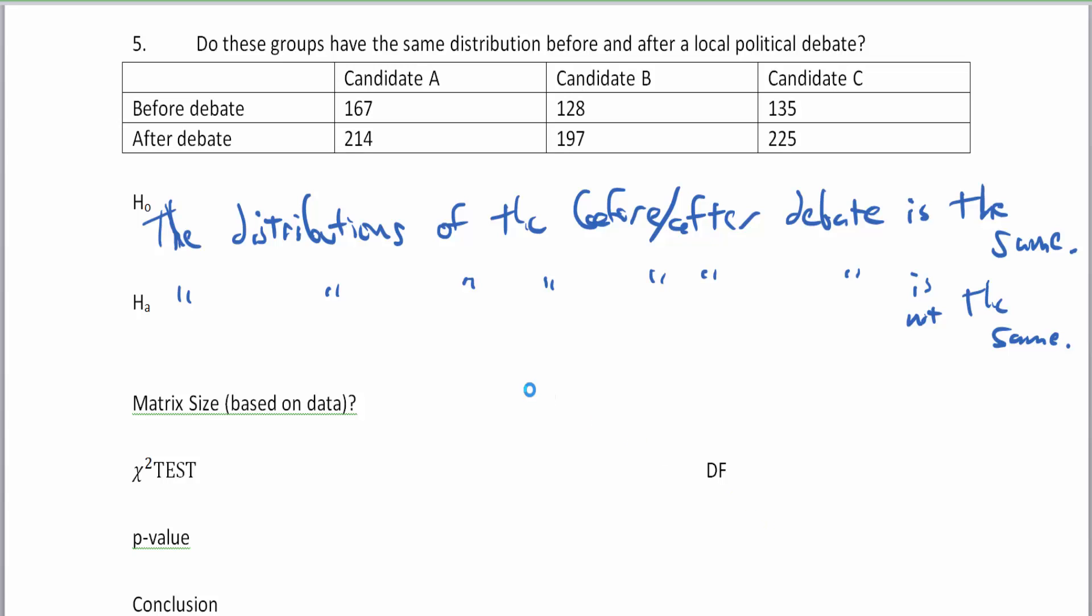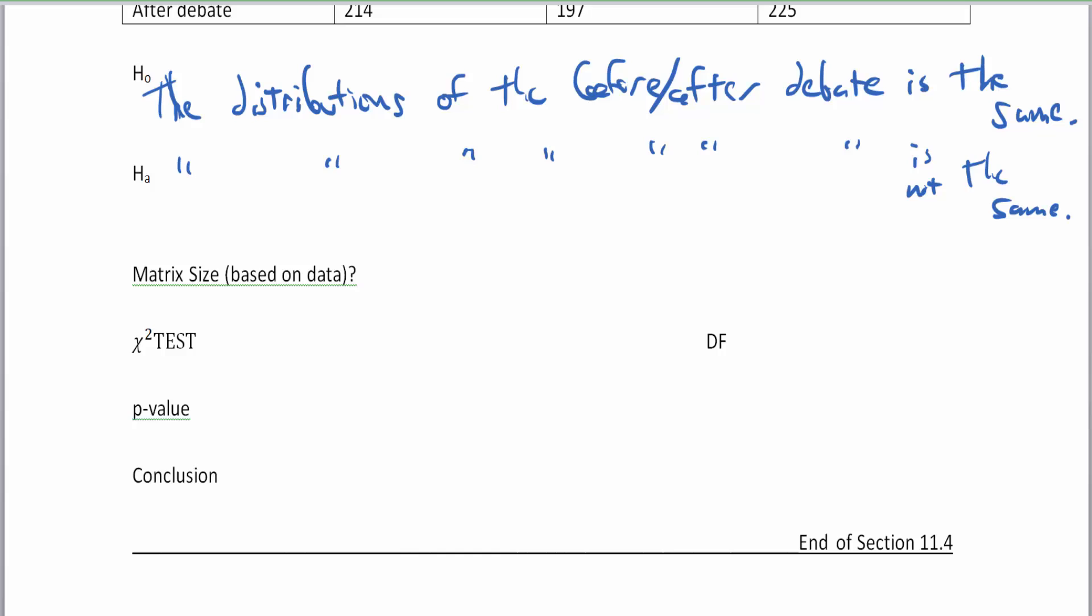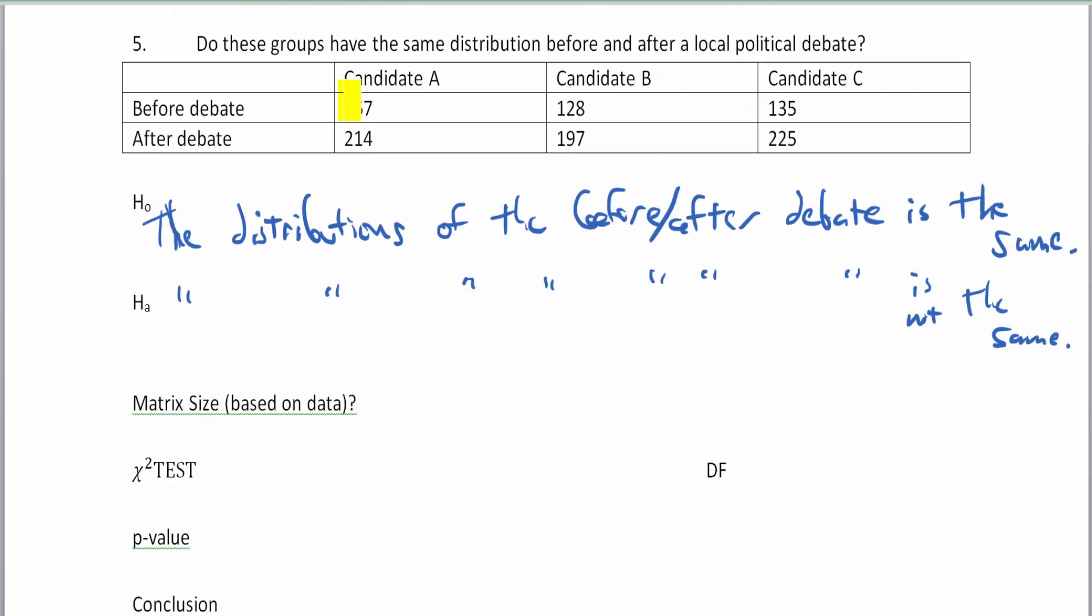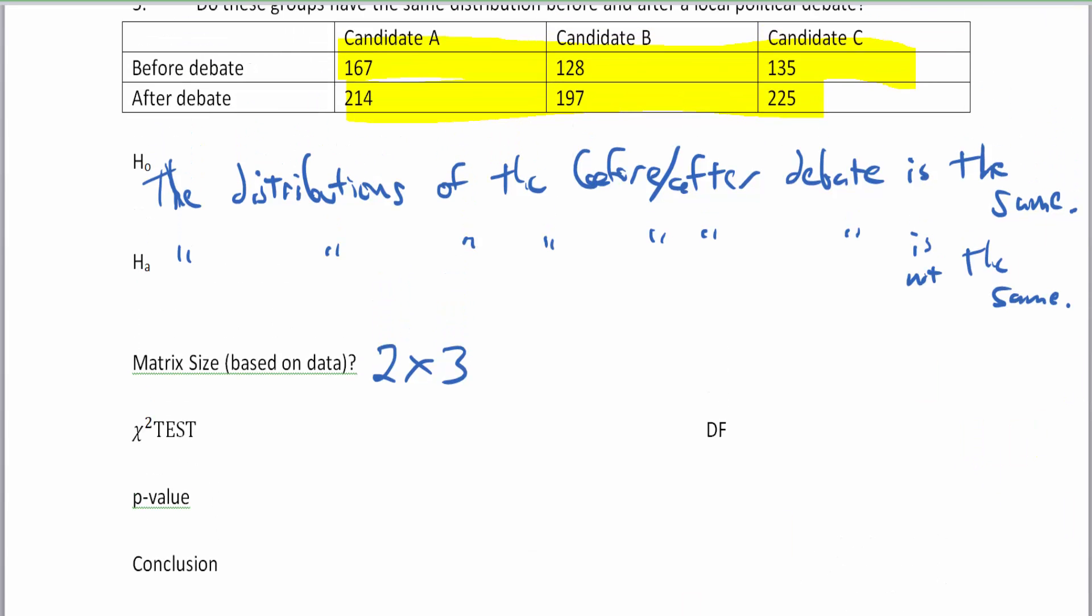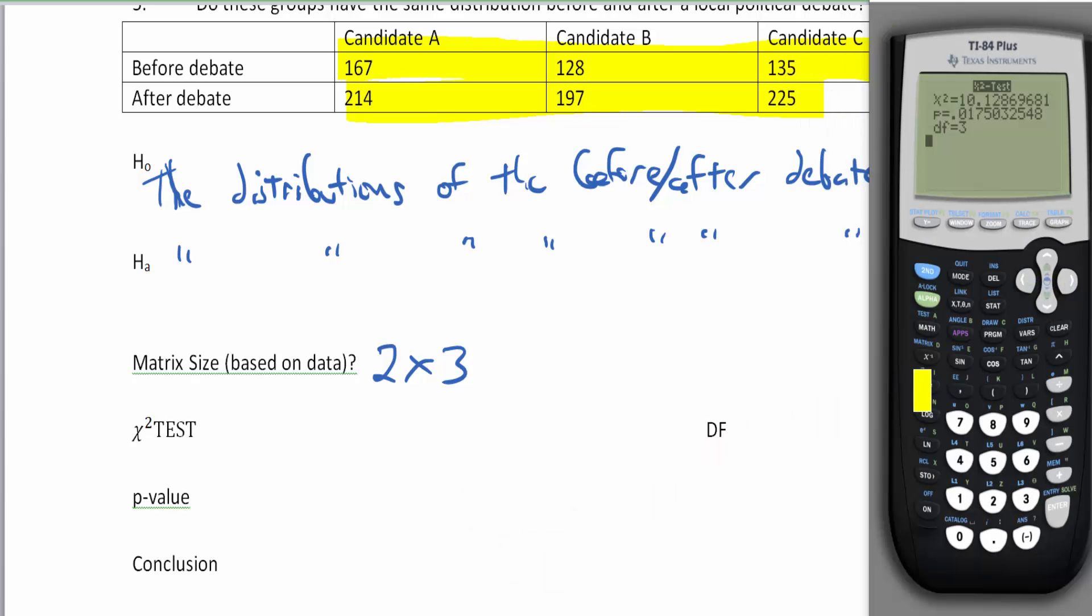Let's check our matrix size. We don't have any totals, so we have two rows by three columns, a two by three matrix. I'm going to hit second matrix or second x inverse, move over to edit, hit enter, then enter three enter. Now I'm going to type in my numbers: 167, 128, and 135.